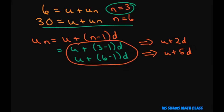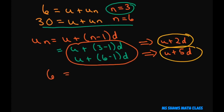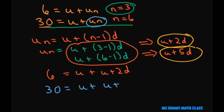Now I'm going to plug these back in. So we get 6 equals u plus u sub n, where u sub n is u plus 2d. And 30 equals u plus u sub n, where substituting gives u plus 5d. So the first equation (n=3) is 6 equals 2u plus 2d, and the second (n=6) is 30 equals 2u plus 5d.